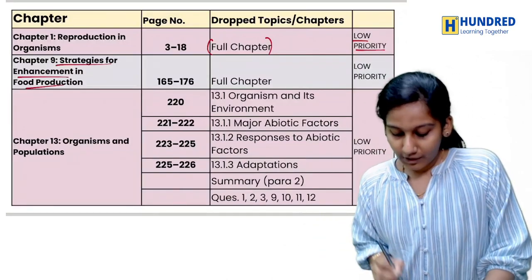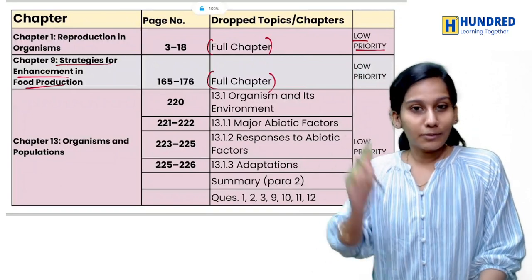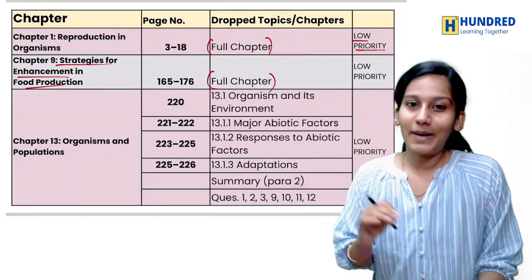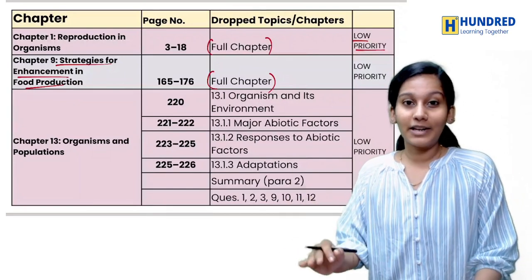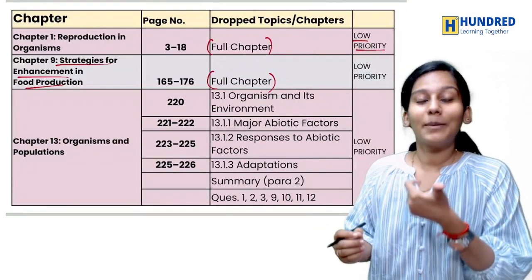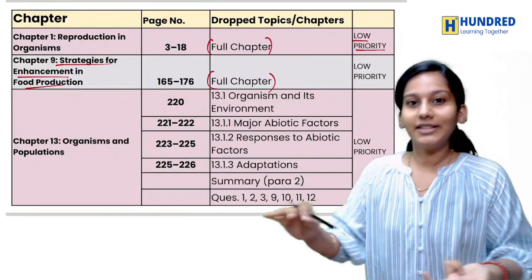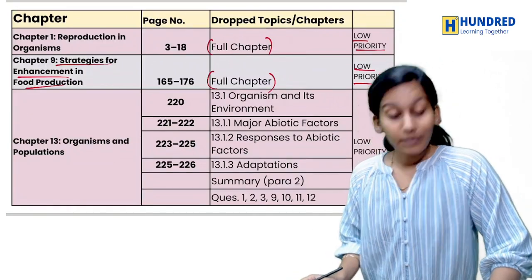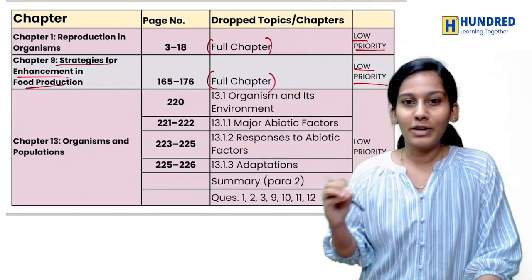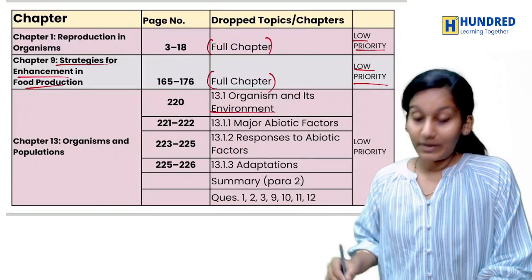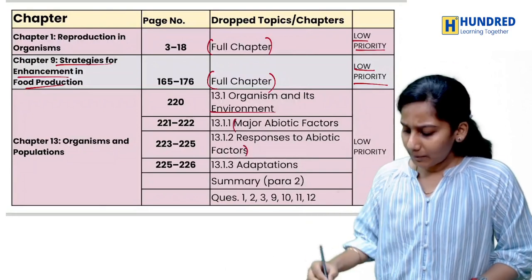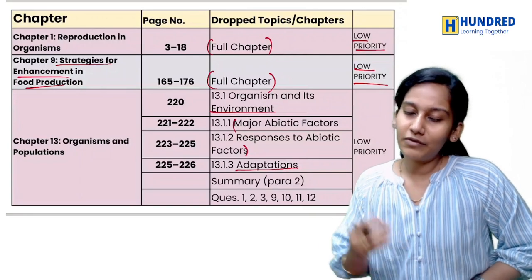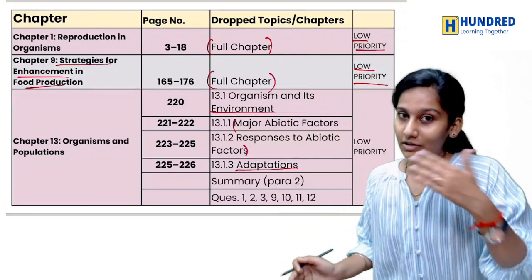Next, the Strategies for Enhancement in Food Production — that is a full chapter removed from CBSE boards. Regarding the 2024 syllabus reduction, we need clarification, but we have to study the chapters that are scheduled. This chapter is also a low priority, so you can read it after December.